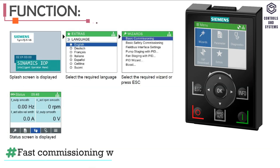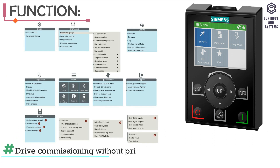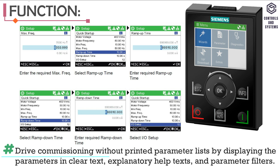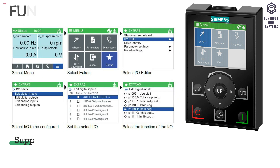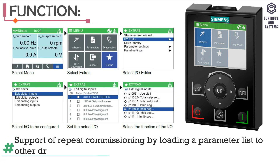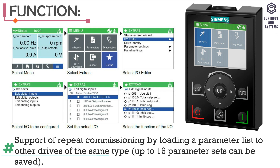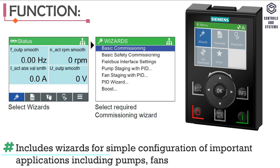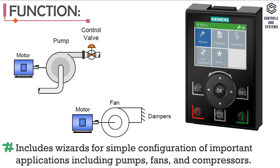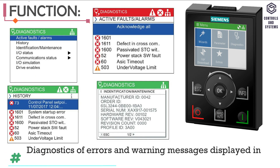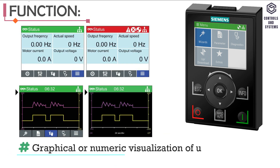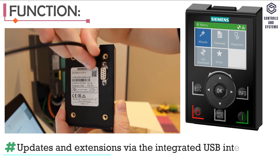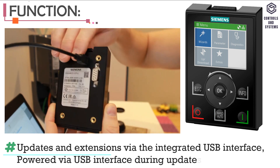Functions: Fast Commissioning Wizard for general commissioning; drive commissioning without printed parameter lists by displaying parameters in clear text; explanatory help texts and parameter filters; support of repeat commissioning by loading a parameter list to other drives of the same type; up to 16 parameter sets can be saved; wizards for simple configuration of pumps, fans, and compressors; diagnostics of errors and warning messages in clear text; graphical or numeric visualization of up to two process values; updates and extensions via integrated USB interface; powered via USB interface during updates.